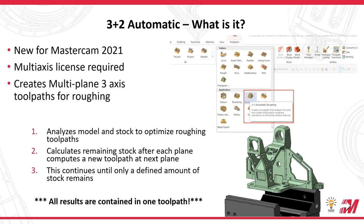The way it works is it analyzes the model and the stock you've specified — stock is very important with this toolpath — to optimize the roughing toolpaths. It calculates remaining stock after each plane and then computes the new toolpath at that next plane. This process continues until only a defined amount of stock remains based on your stock delta values on the model geometry page. The real thing about this is it's all contained in one toolpath — not five different stock models and five different operations.